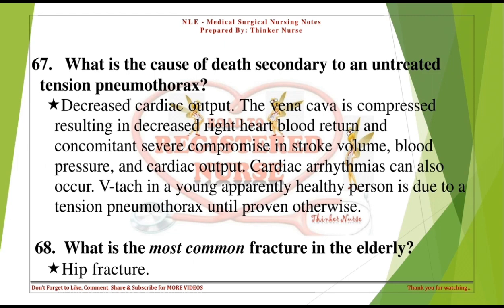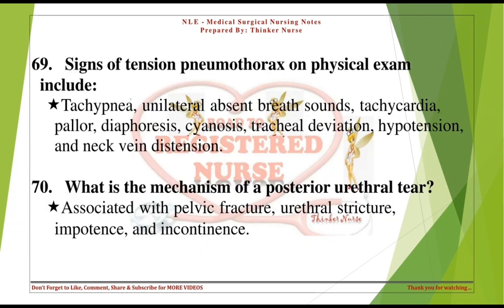What is the most common fracture in the elderly? Hip fracture. Signs of tension pneumothorax on physical exam include: tachypnea, unilateral absent breath sounds, tachycardia, pallor, diaphoresis, cyanosis, tracheal deviation, hypotension, and neck vein distension.